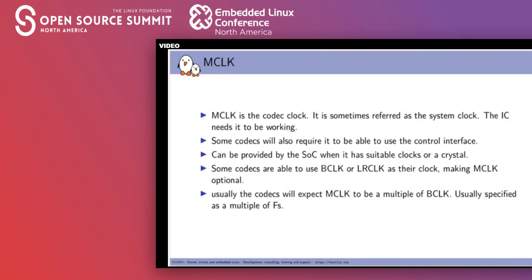There is also a separate third clock — MCLK — also referred to as the system clock or CCLK. This clock goes to the codec and is what the codec needs to be working. Some codecs also require that MCLK or system clock to even use the controller interface, so you really need to be able to provide that clock before playing an audio file or sample.